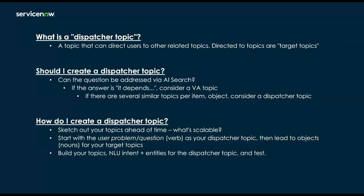So what is a dispatcher topic? A dispatcher topic is basically a topic that can direct users to other related topics. Those other related topics that you get directed to or dispatched to, we call target topics — so you usually have a dispatcher topic leading to a target topic. When you hear 'dispatcher topic' and think 'should I create one?', I usually follow this train of thought. Number one: can the question be addressed via AI search? Is it a one-and-done question? If it can be, maybe you use AI search to surface that knowledge article or catalog item.